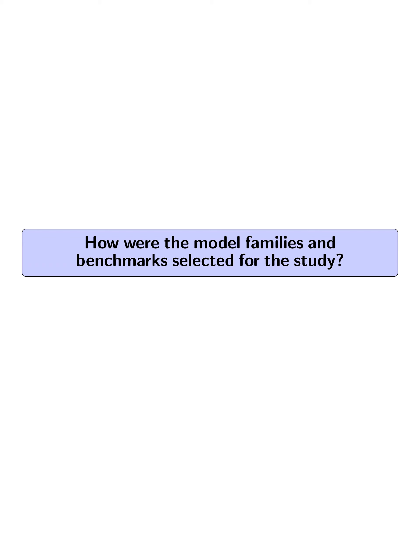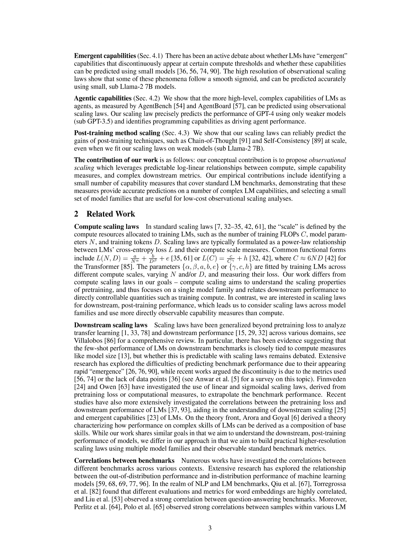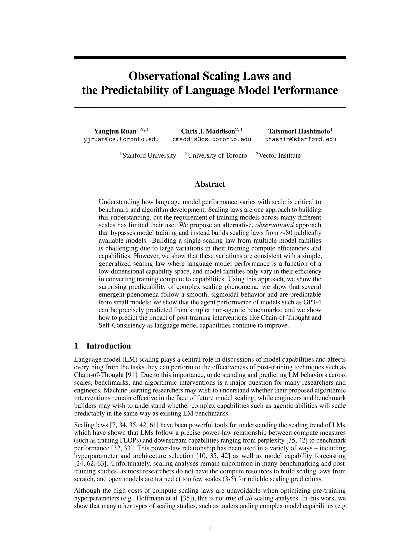How were the model families and benchmarks selected for the study? The model families and benchmarks were selected based on a systematic approach. A broad set of 21 model families covering a wide range of scales and capabilities were included. These families included models trained from various recipes, such as standard training recipes like LLAMA and QWEN, models trained on synthetic data like Phi, and models specifically trained on code data like CodeLLAMA and StarCoder.